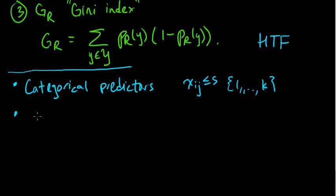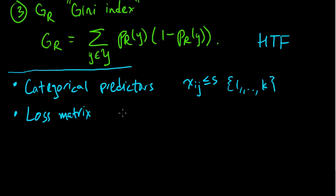Another possibility that might come up is if you have a loss matrix — in other words, predicting one class when you should have predicted another is not necessarily the same error for different types of errors. This can also be incorporated into the tree-growing procedure; you can incorporate the loss matrix in a smart way.